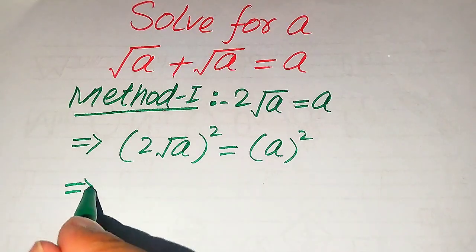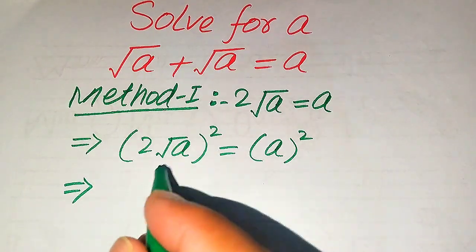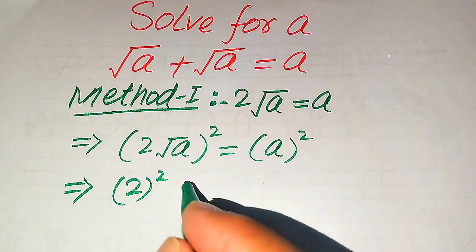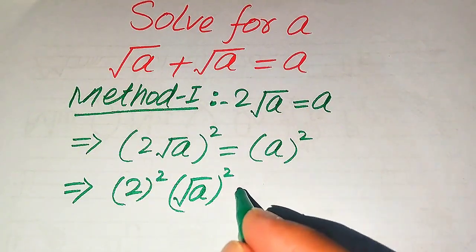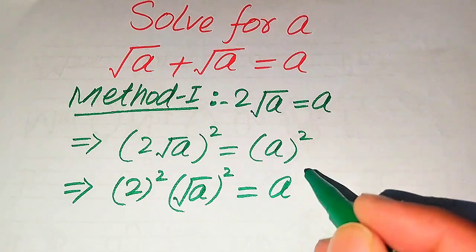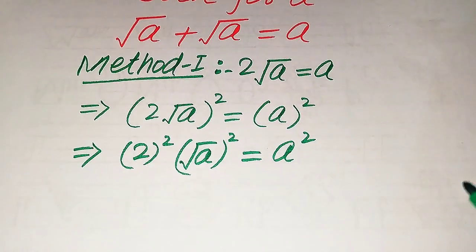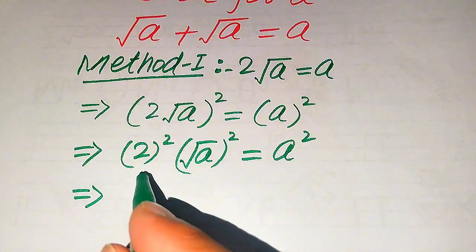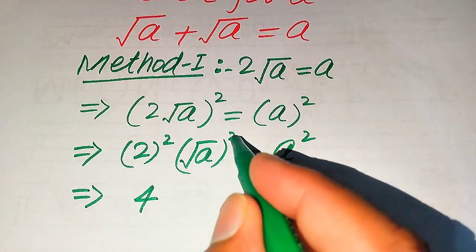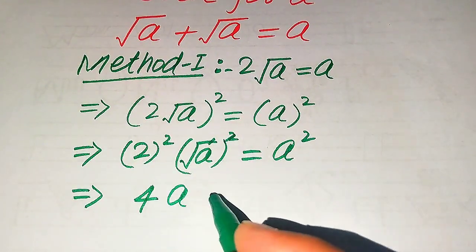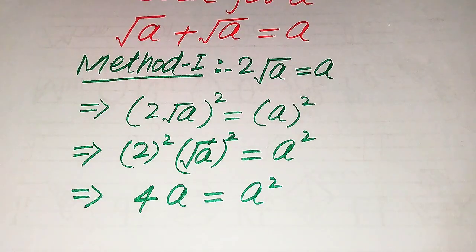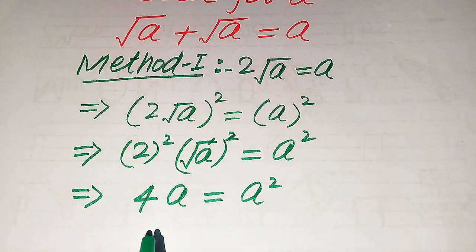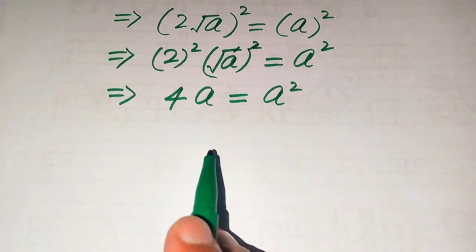We apply the square separately on both values: two squared times the square root of a, squared, equals a squared. In the next step, two squared becomes four, and the square root cancels with the square, giving us 4a equals a squared.